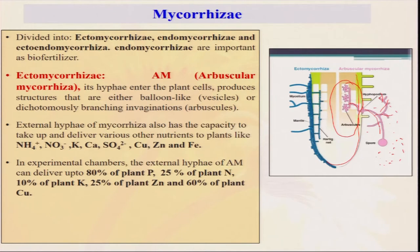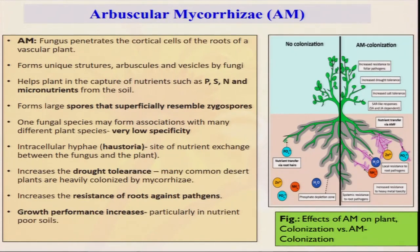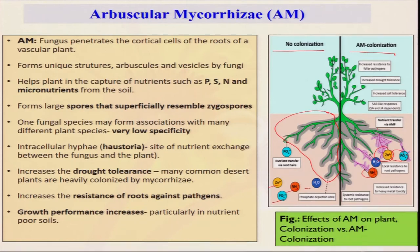This shows two pictures — one side without AM colonization and one side with AM colonization. If you see the root — here the root is limited up to a certain point and cannot reach where zinc, phosphorus, and other things are present. But in the case of colonization with AM — arbuscular mycorrhiza — they make a net-type structure and can easily take nutrients present at a greater distance and help mobilize these nutrients to the plant root. When they come to the plant root, the plant is able to absorb them — this is the mobilization of nutrients by AM.